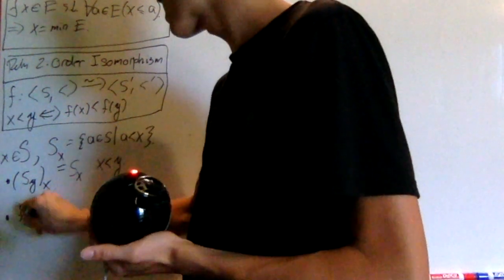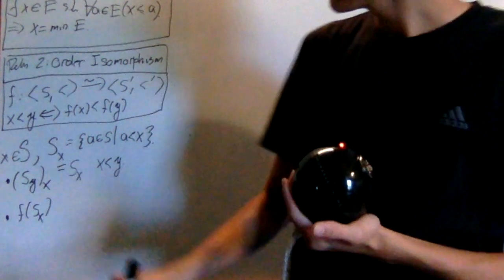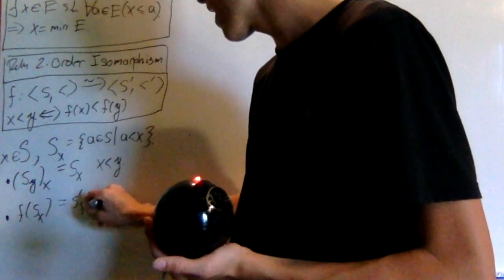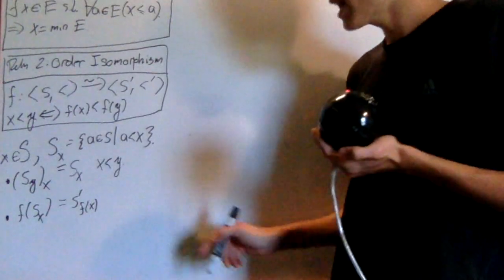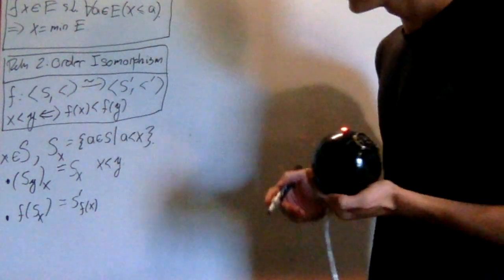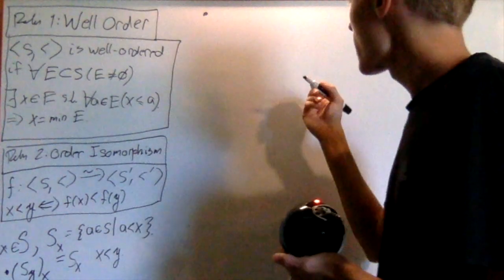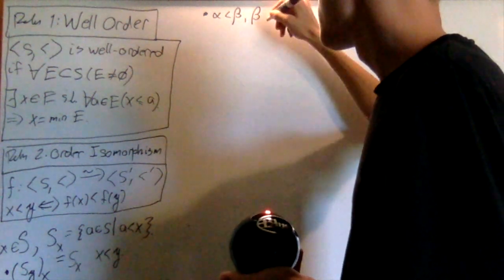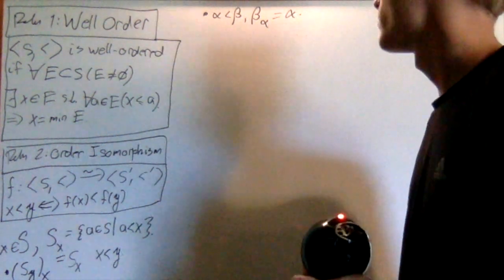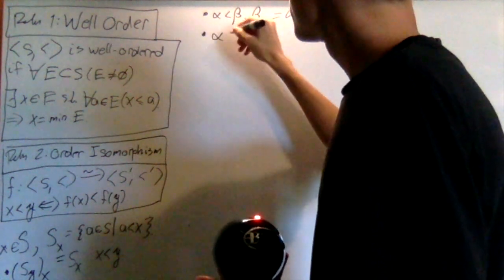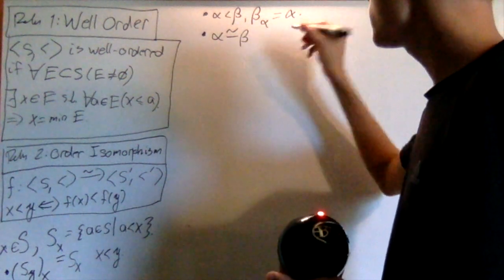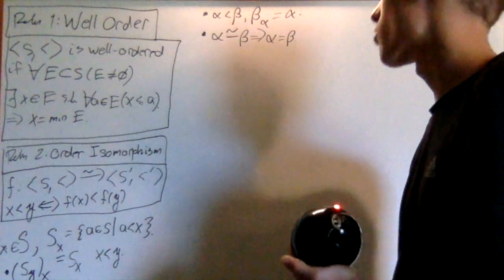The other important property is that if f is an order isomorphism from s to s-prime, then f applied to the segment s_x equals s-prime at f(x). These are the two key reasons why segments are important. For ordinals specifically: if alpha is less than beta, then beta segmented at alpha is just alpha. And second, if alpha is order isomorphic to beta, that means alpha equals beta.